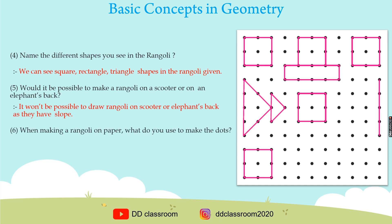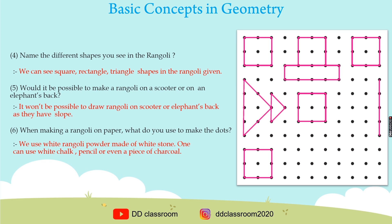Question six: When making a rangoli on paper, what do you use to make the dots? The answer is we use white rangoli powder made of white stone. One can also use white chalk, pencil, or even a piece of charcoal.